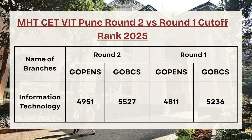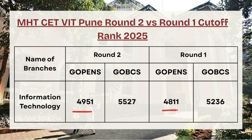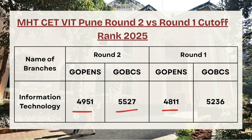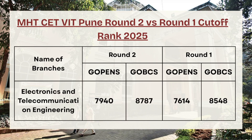Next in the list we have Information Technology. For G Open category, the cutoff rank is 4,951 in round two whereas in round one it was 4,811 — a very slight change. For G OBC category, the cutoff rank was 5,527 in round two whereas in round one it was 5,236, so there is a difference of at least 300 points between round one and round two in G OBC category.